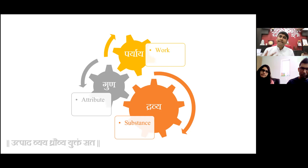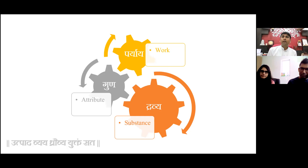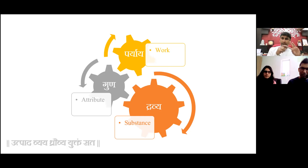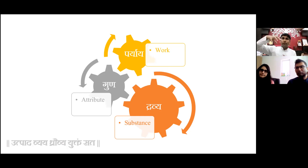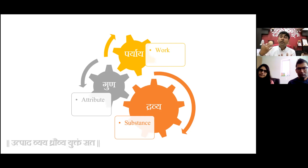What is Pariyaya? Pariyaya is nothing but the work done by the gunas. The qualities which are working, the qualities which we can appreciate, perceive — those qualities which are in function are called Pariyaya. These three things are very important. The whole structure of Dravya: there is one Dravya which is the owner. This owner has infinite qualities — we call them gunas. Each and every guna does its own function continuously, always. That functioning of guna is called Pariyaya.